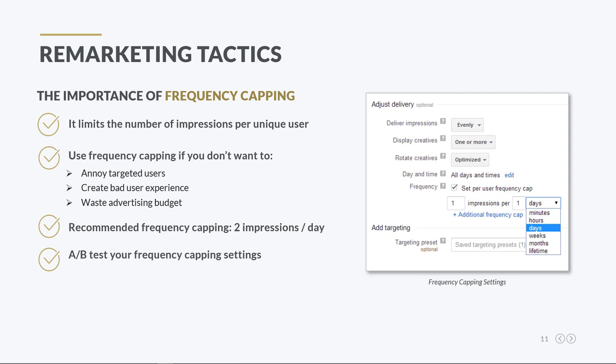In general, programmatic advertisers must find the optimal ad frequency for their business by carrying out A-B tests and analyzing click-through rates.